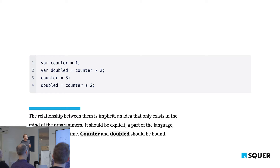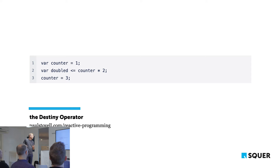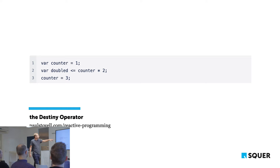People invented something called the 'destiny operator.' With it, if we change counter to 3, then doubled would automatically be 6. That's basically the main concept of reactive programming — making the relationship between values explicit and automatically maintained.